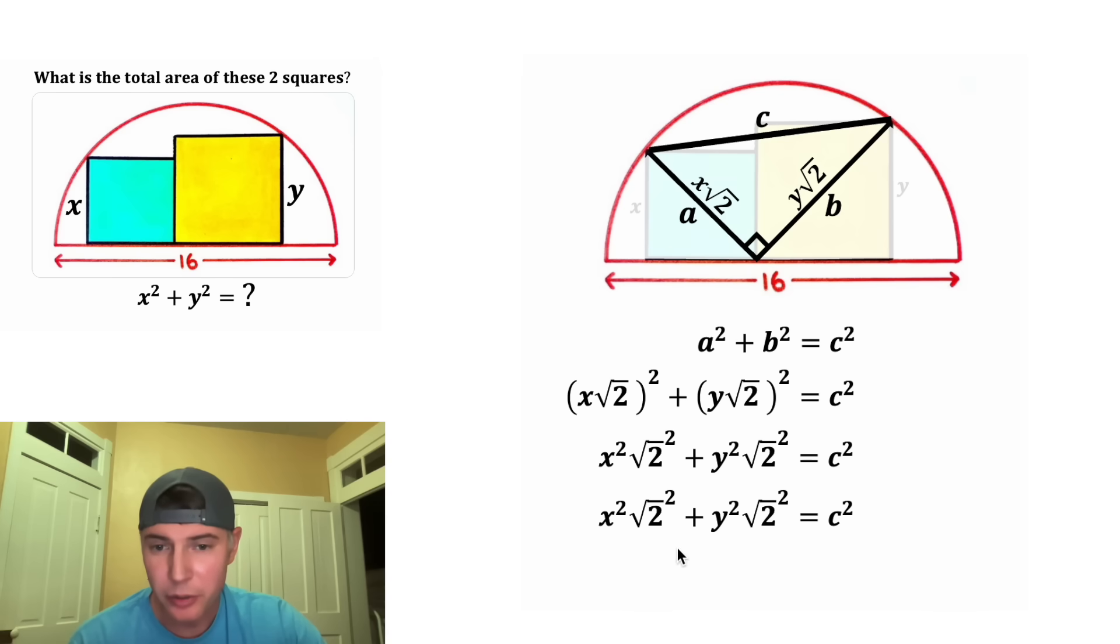So this square root and square will cancel each other out. And same thing, this square root and this square will cancel each other out. So we're going to be left with 2x squared plus 2y squared equals c squared.